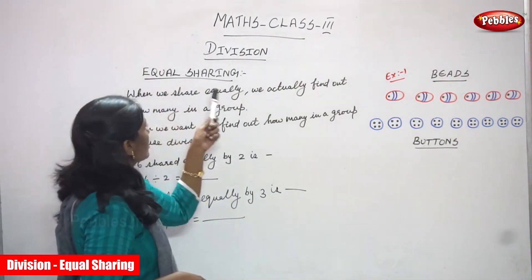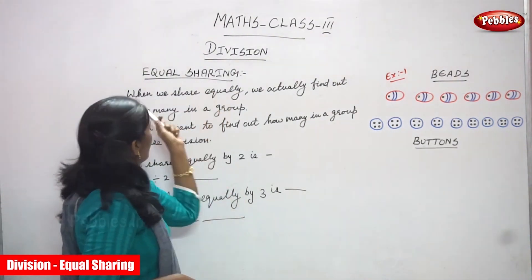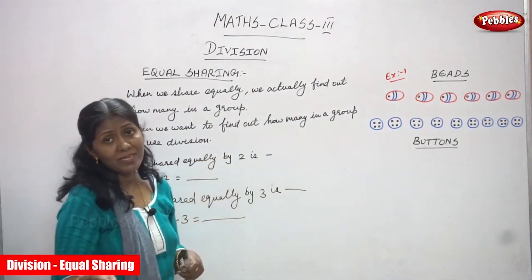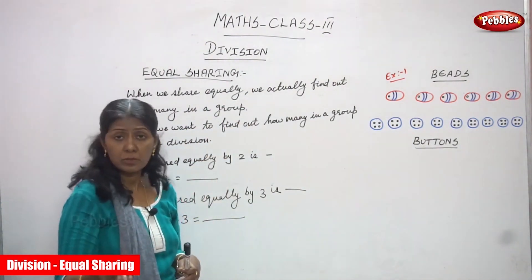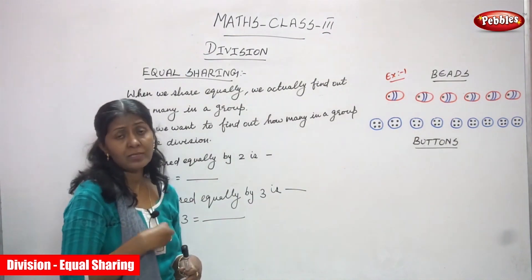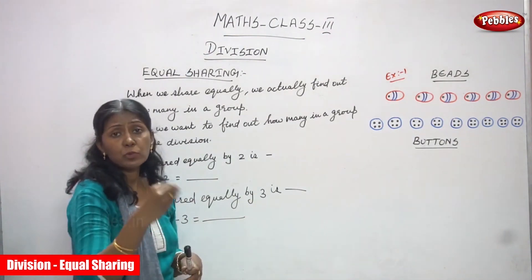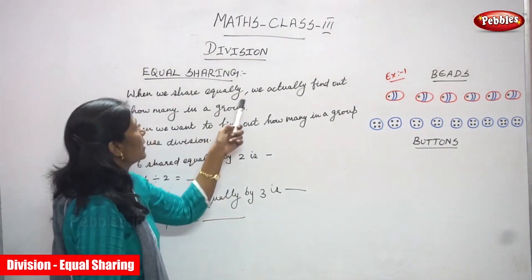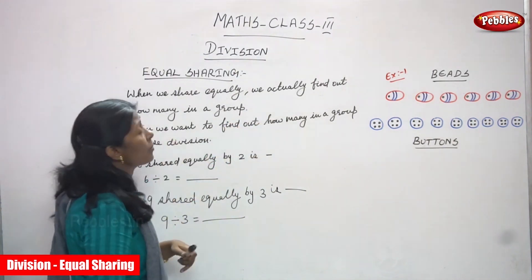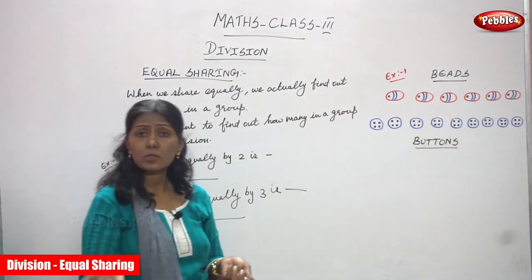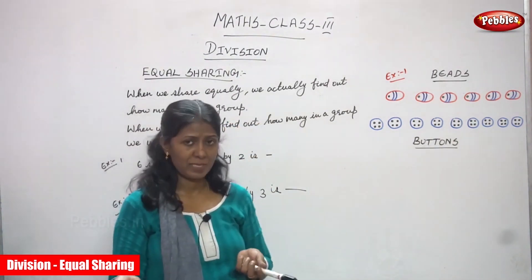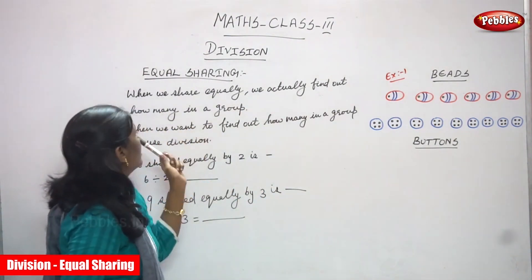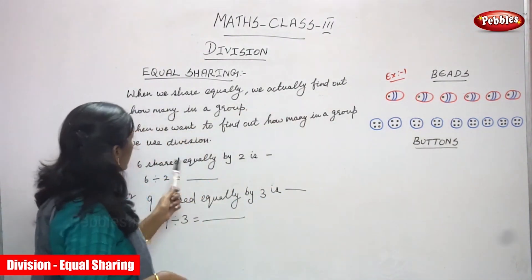When we share equally, I am giving 2 chocolates each. I am having 10 chocolates and giving 2 chocolates to each child — that is what shared equally. We actually find out how many in a group. That means how many are in a group — that is called 5 groups. We find out how many in a group.